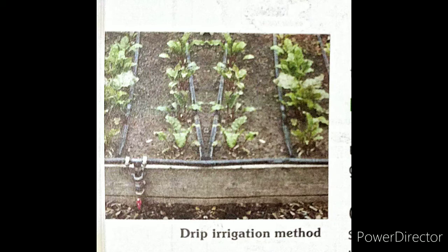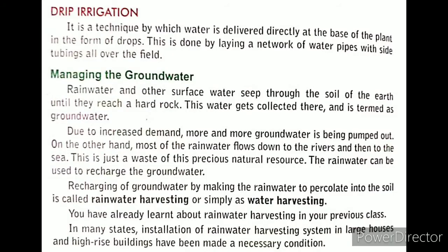The next topic is managing groundwater. As the demand for water increases, groundwater is pumped out, while most rainwater flows into rivers and then to the sea. Rainwater is a precious natural resource and can be used to recharge the groundwater. Recharging of groundwater by making rainwater percolate into the soil is called rainwater harvesting, or simply water harvesting.